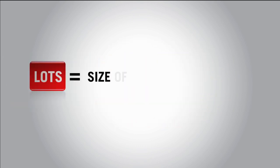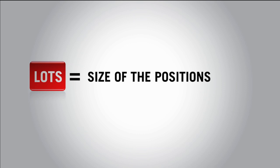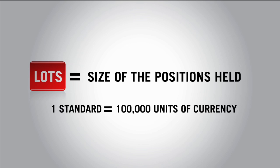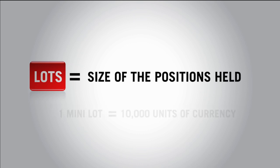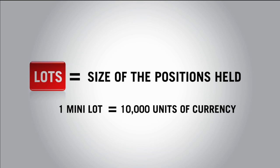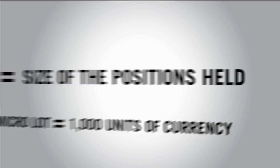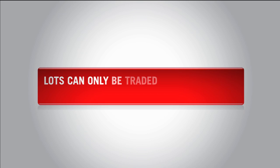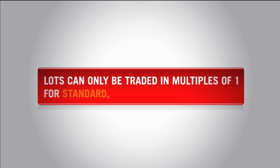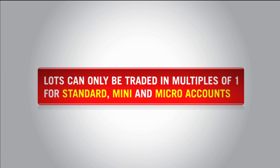Pips measure the actual movement of currency rates, while lots are the size of the positions held. One standard lot equals 100,000 units of currency. One mini lot is 10,000 units of currency, and one micro lot is 1,000 units of currency. Lots can only be traded in multiples of 1 for standard, mini, and micro accounts.